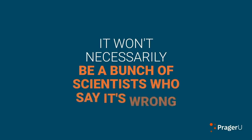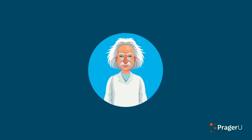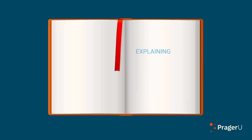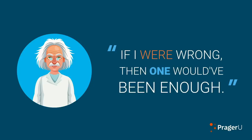And if it's wrong, it won't necessarily be a bunch of scientists who say it's wrong. It might be one guy. Ask Einstein. One hundred scientists wrote a book explaining why his theory of relativity was wrong. He quipped, if I were wrong, then one would have been enough.